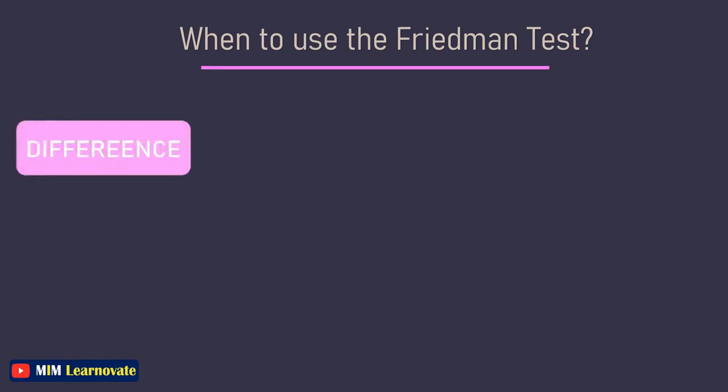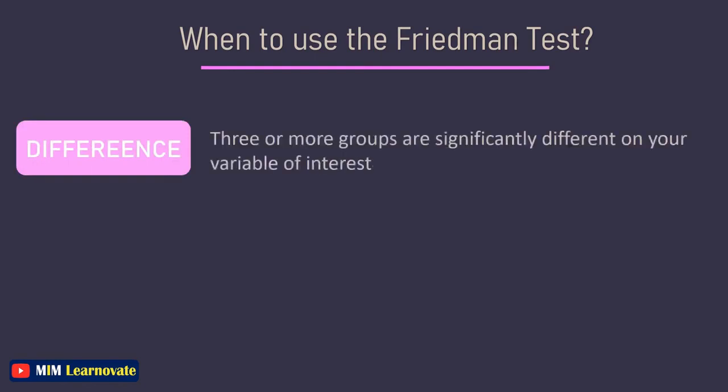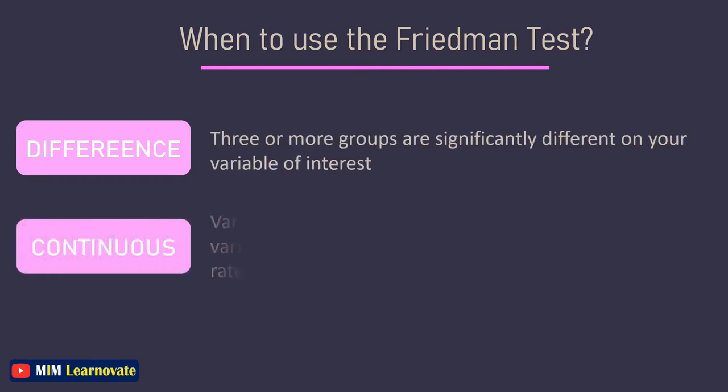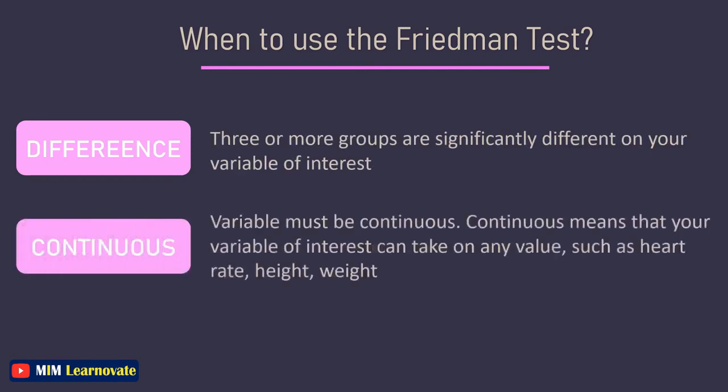You are looking for a statistical test to see whether 3 or more groups are significantly different on your variable of interest. Your variable of interest must be continuous — meaning it can take on any values such as heart rate, height, weight, or number of ice creams you can eat in one minute.